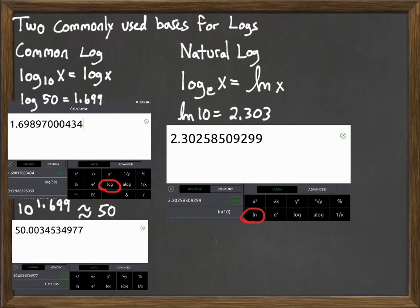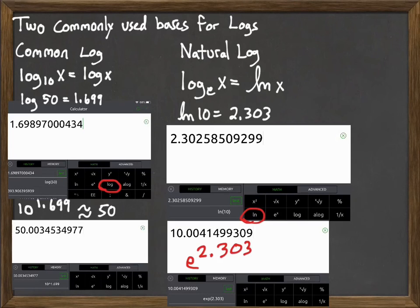There's the answer on the calculator: 2.303. If we actually raise e to that power, we can see it's roughly 10. It's not exactly 10 because we rounded it off.